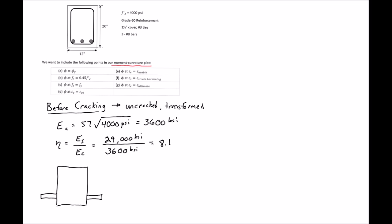With our modular ratio we can now transform our section. We transform the steel to an equivalent area equal to As times (n minus 1), located at a distance d from the top. For all of our section properties, we're going to measure Y from the top. The first property we'll find is d, the depth of our steel.